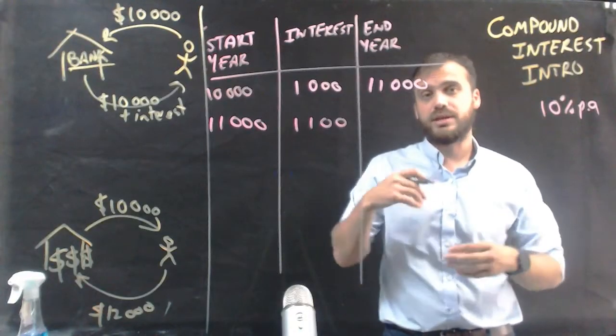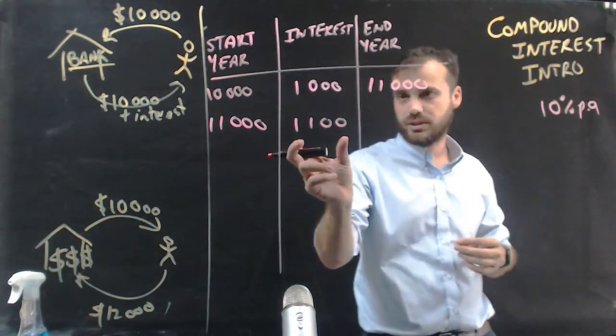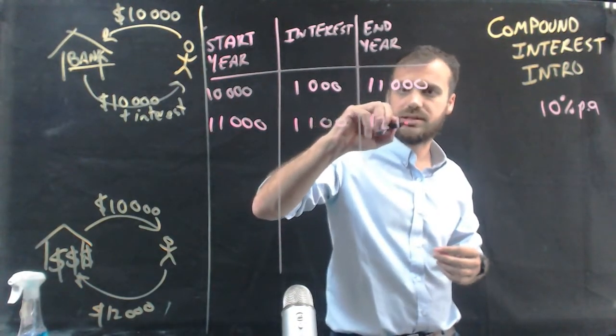So that means that by the end of the second year, you'll have $11,000 plus $1,100, you'll have $12,100.